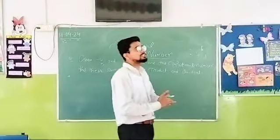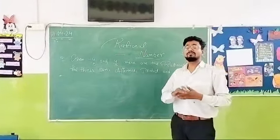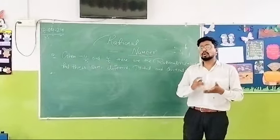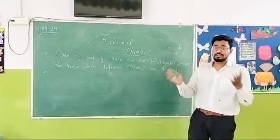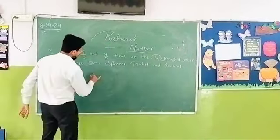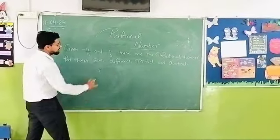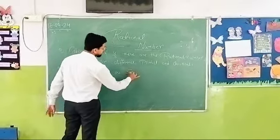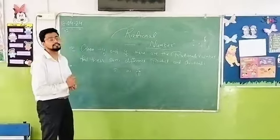So any integers which is written in the form of fractions like numerator and denominator, but the denominator cannot be zero. So all the numbers are called rational numbers. Like, if I write 5, I can write 5 as 5 upon 1. So 5 is numerator and 1 is denominator.